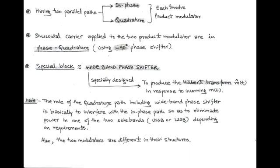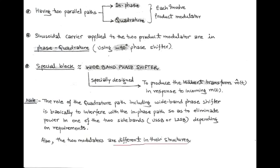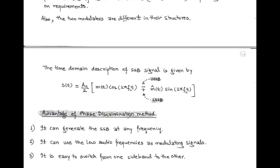The role of the quadrature path, including the wideband phase shifter, is basically to interfere with the in-phase path so as to eliminate the power of one of the two sidebands — whether upper or lower single sideband depending on our requirement. In the phase discrimination method, two modulators are used, both different in their structures. The output of the phase discriminator is the SSB modulated wave S(t), which equals (A_C / 2)[M(t)cos(2πf_C t) ∓ M̂(t)sin(2πf_C t)], where minus is for upper single sideband and plus for lower single sideband.